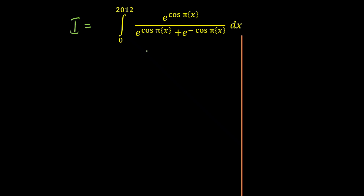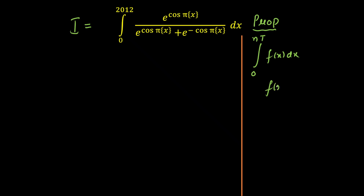The first thing I can see here is that since fractional part of x is present and cos is present, this function must be periodic. Now in integrals we have one special property. When you have integration of periodic functions, the property says that when you have integration from 0 to nT of f(x) dx, this function should be periodic with period T.